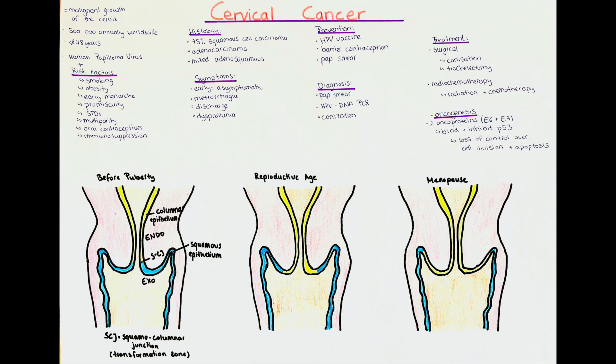In the last part, I want to talk about the oncogenesis of cervical cancer. HPV is the main culprit of the development, especially when paired with additional risk factors. This is due to HPV expressing two viral oncoproteins called E6 and E7. Those proteins bind to P53, which is a tumor suppressor gene that usually controls cell division and cell death. These oncoproteins inhibit its function, so the control over cell division and growth is lost, which is a key component of cancer growth.